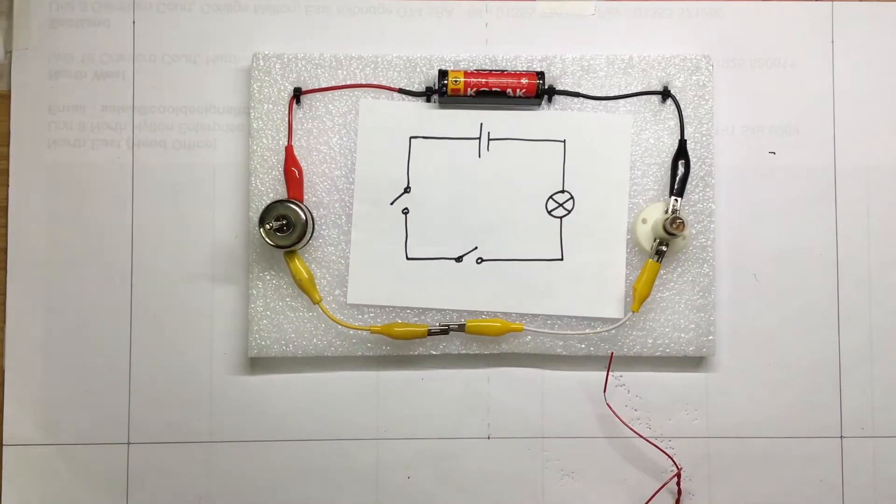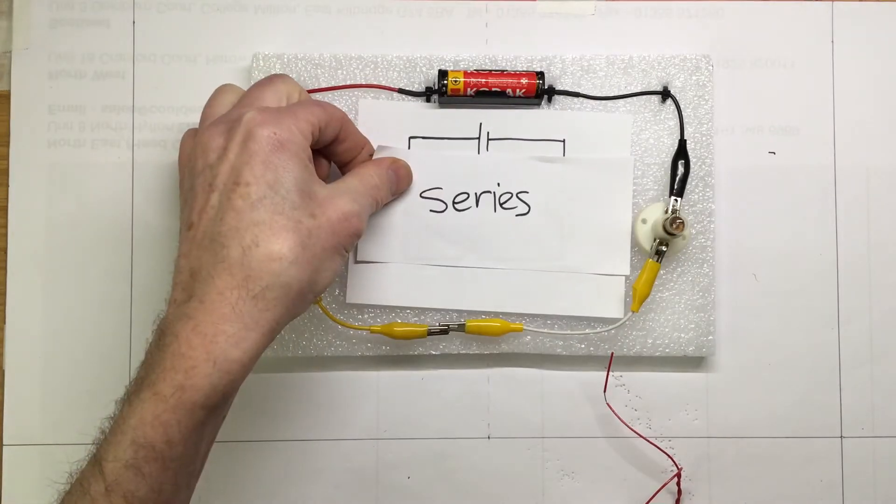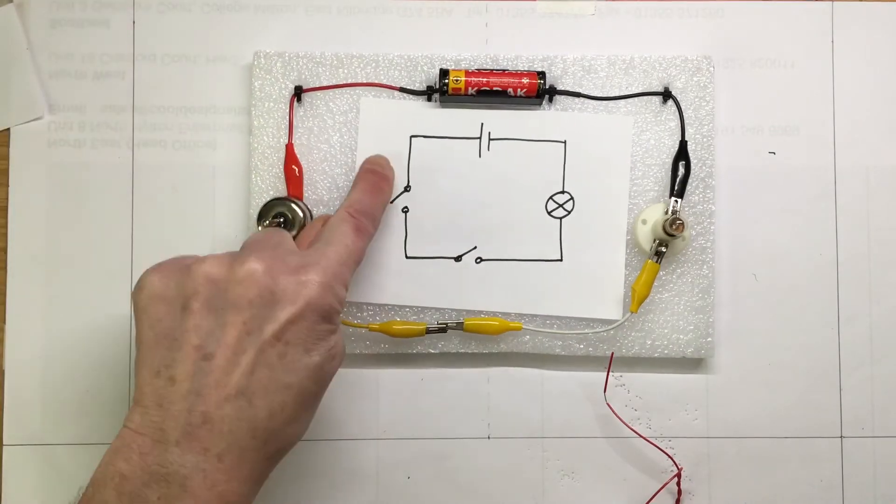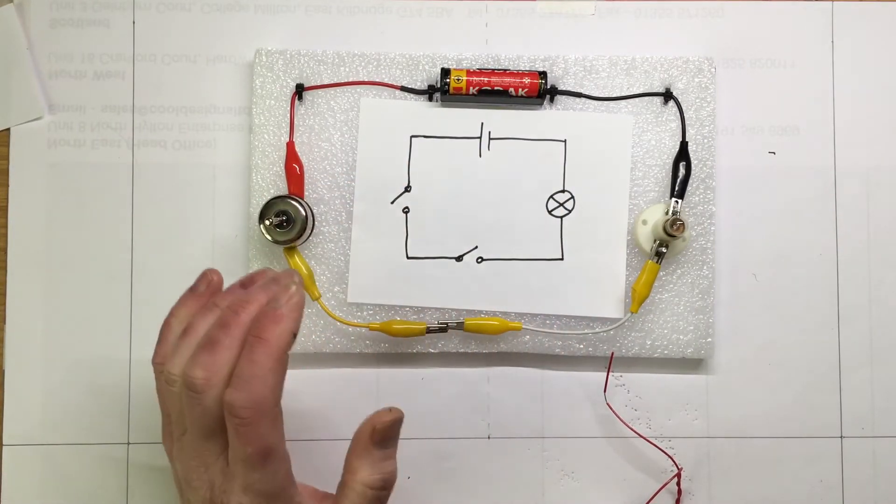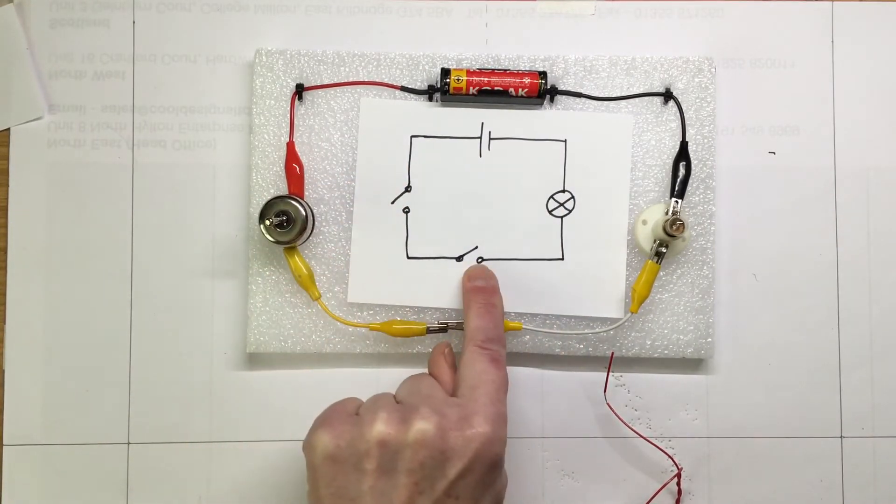If we want to create a series circuit involving switches, then we've got to join the next switch in that circuit. So this is a series circuit - one switch follows the next switch.